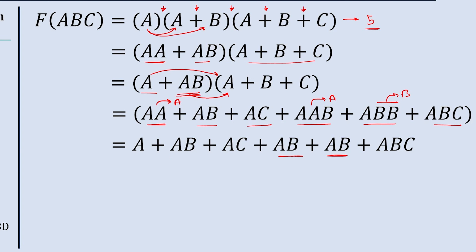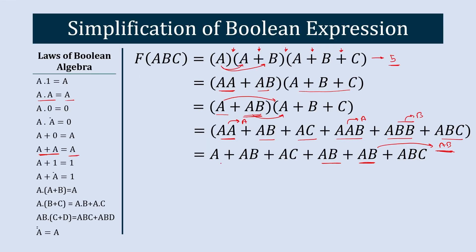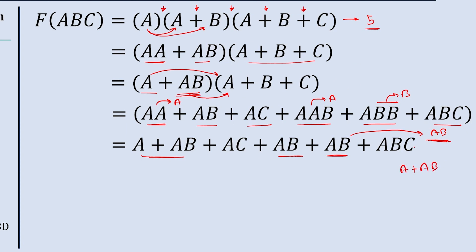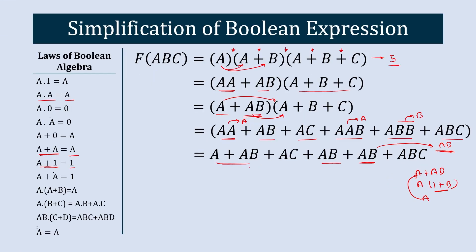Here you can see AB plus AB — since A plus A equals A, AB plus AB results into a single AB. Now we also have A plus AB, which equals A by Boolean law. To show how: take A common from A plus A·B to get A·(1 plus B). Since 1 plus B equals 1, and A plus 1 equals 1, we are left with just A. So A plus A·B equals A.